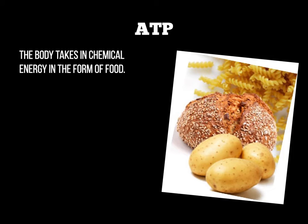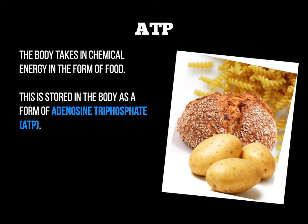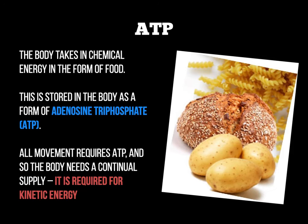Let's start with ATP. When the body takes in food, we start to store that as chemical energy. And the way we store that is in the form of adenosine triphosphate, known as ATP. Any movement we use with our muscle groups will require ATP, so we need a continual supply of food and therefore energy — because we need that for kinetic energy to fire the muscle groups when we need to move.